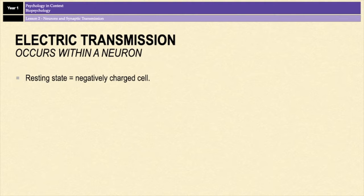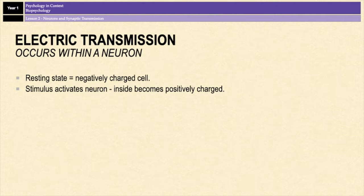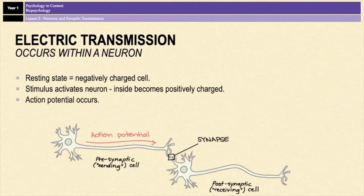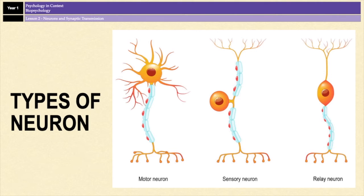When a neuron is activated by a stimulus, the inside of the cell becomes positively charged for a split second, which causes what's known as an action potential that travels down the length of the neuron, carrying with it the message that needs to be communicated. This happens in this way in all different types of neuron.